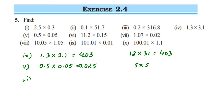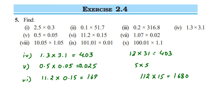The sixth question is 11.2 multiplied by 0.15. Multiply 112 and 15, which equals 1680. Now placing the decimal: the first number has one digit after the decimal, the second has two digits, so total three digits. Counting three digits from the right — 0, 8, 6 — we place the decimal, giving 1.680.